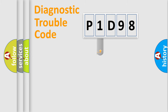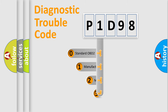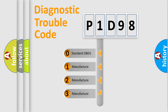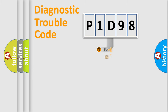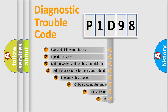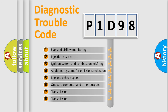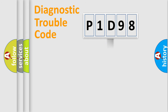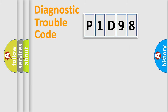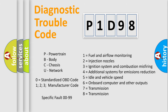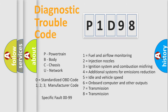This distribution is defined in the first character of the code. If the second character is expressed as zero, it is a standardized error. In the case of numbers 1, 2, or 3, it is a manufacturer-specific expression of the error. The third character specifies a subset of errors, and only the last two characters define the specific fault of the group. This division is valid only when the second character is zero.